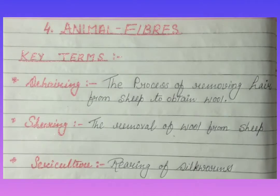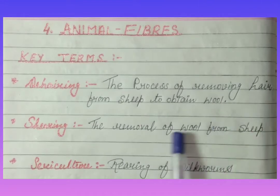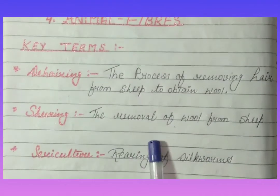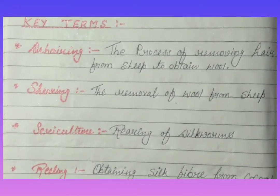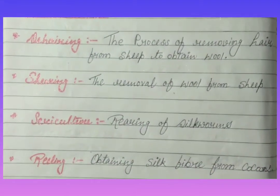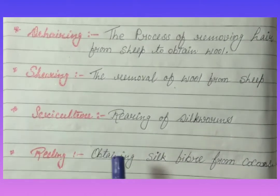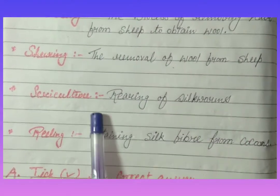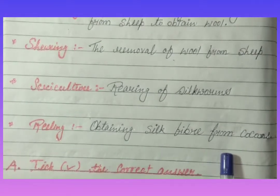Now the first key terms. De-hairing: the process of removing hair from sheep to obtain wool. Scouring: the removal of oil from the fleece. Sericulture: the rearing of silkworms. This process is called sericulture. Reeling: obtaining silk fiber from cocoons.